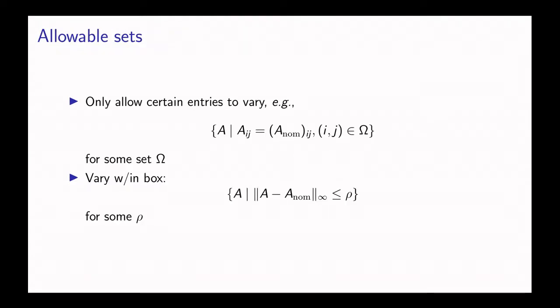In this slide we give two examples of allowable sets theta. One possibility is that we could allow only certain entries in A to vary, so here we're saying the allowable set is every A that is equal to A nominal at a set of specified entries but can vary in the other entries.